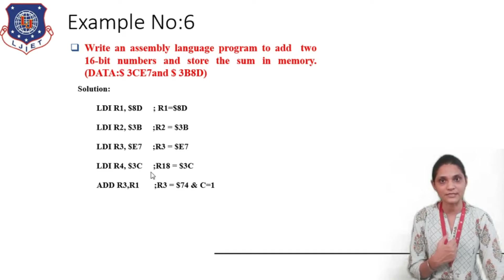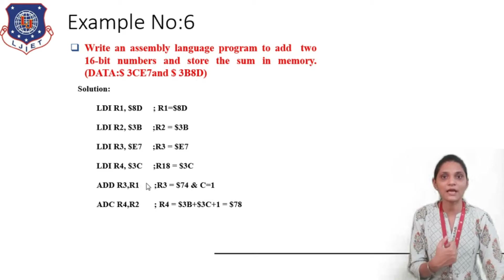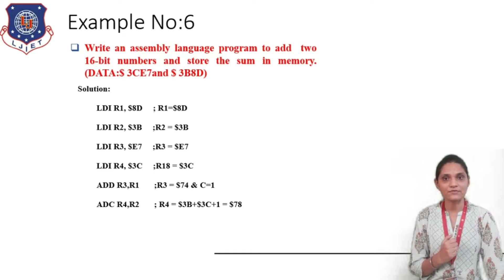This will add the contents of registers R3 and R1, and the result is stored inside register R3. So the first addition result is inside R3. Then we use the ADC instruction — if any carry was generated with this first addition of 8D and E7, the result is like 74 with carry 1. For the next addition of 3C and 3B, we use ADC R4, R2. This will add the contents of R4 and R2 with carry, and the result stored in R4 will be 78.